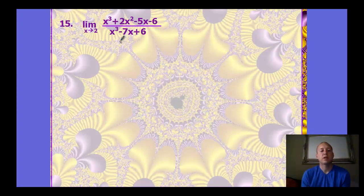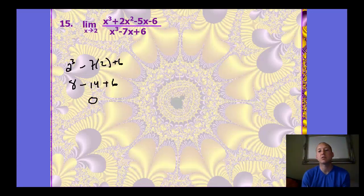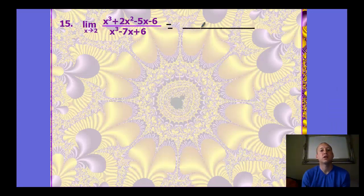Here's another example. For this one, if we plug 2 into the denominator — 2 cubed minus 7 times 2 plus 6 equals 8 minus 8, which is 0. So the denominator is again 0, and we can't just substitute. So we want to try factoring the numerator and denominator.